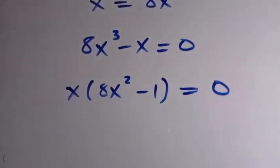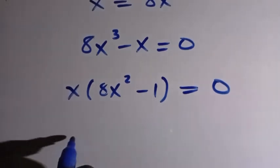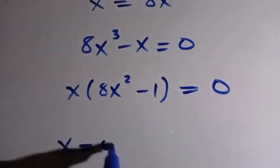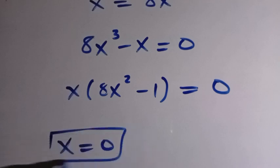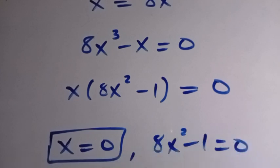So therefore, looking at these two expressions, we can conclude that the value of x here is either equals to 0 or we can still get the value of x here which is 8x squared minus 1 equals 0.